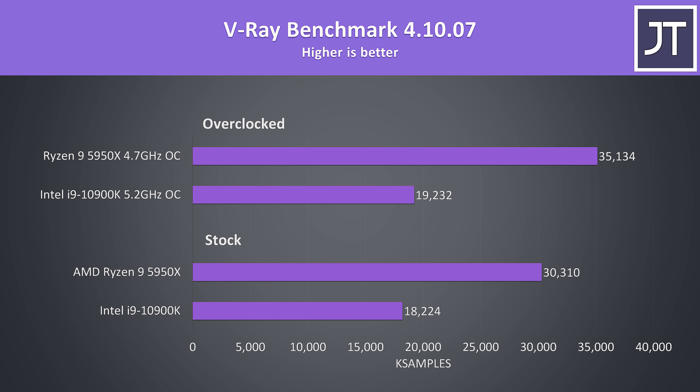The V-Ray benchmark uses the CPU to render out a scene, and as another test that sees a benefit from more threads, it's a big win for the 5950X, which was scoring 66% faster than the 10900K at stock, then 83% higher with both overclocked. The 5950X overclocked is almost 5000 points ahead of itself at stock, while the 10900K is just 1000 points ahead of itself at stock.